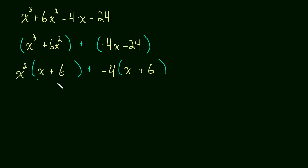And now we have an x plus 6 multiplying both terms. So we can just factor that out. So this becomes x squared minus 4 times by x plus 6.